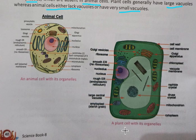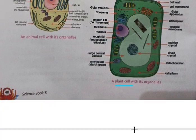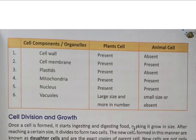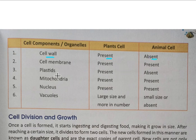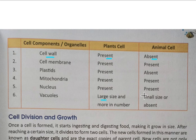You have to copy the diagram of animal cells and plant cells. The cell components differ as follows: cell wall is present in plant cells and absent in animal cells; cell membrane is present in both; plastids are present in plants and absent in animals; mitochondria and nucleus are present in both. Vacuoles are large in plant cells and small in animal cells.